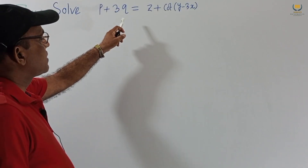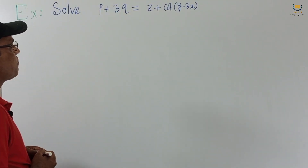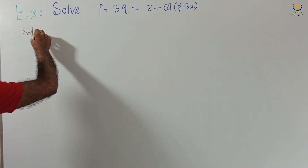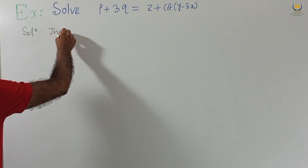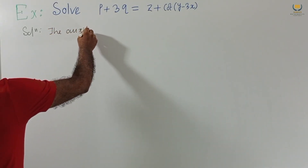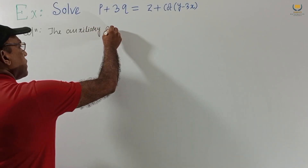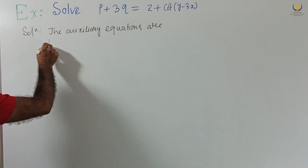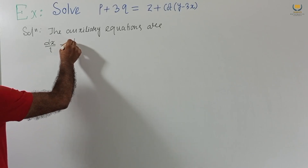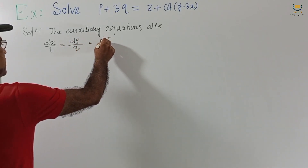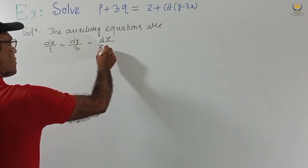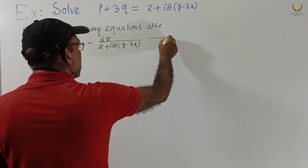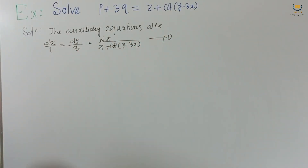Solve P plus 3Q equal to Z plus cot(Y minus 3X). The auxiliary equations are DX by 1, DY by 3, DZ by (Z plus cot(Y minus 3X)). This is our auxiliary equation.